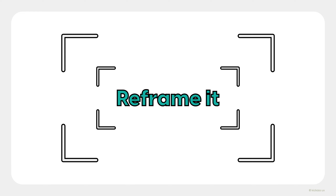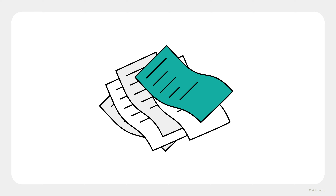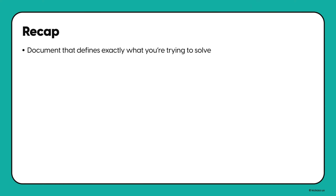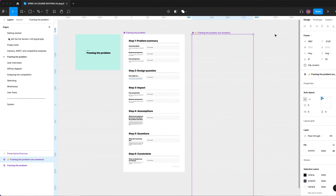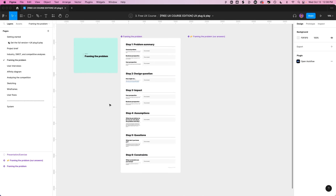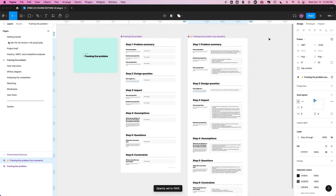And that's it. Sometimes the insights you gain from your research will indicate that you actually framed the wrong problem. At that point, you'll come back to the document and rewrite it to reflect the problem you're now trying to solve. In other words, framing the problem is a living document that might change along the way as you gain a deeper understanding of the user. To recap, framing the problem is a document created at the beginning of a project to define exactly what you're trying to solve. It has six steps, starting from defining the problem to listing out constraints. Now it's your turn — go to the framing the problem tab in the Figma workbook, complete the worksheet, then compare your answers to the provided example. Happy framing!